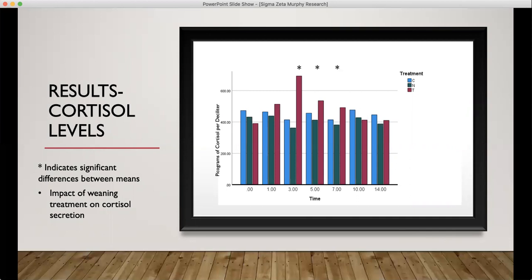From the first two sample periods, there was no difference between the three treatments, but notice that on day three, the cortisol spikes and is significantly greater in the traditional group than in the nose flap and control groups. It is significantly greater at P is less than 0.001.